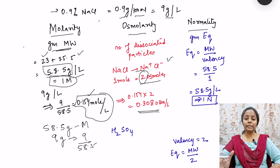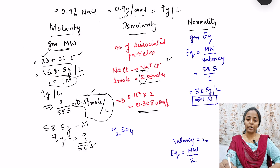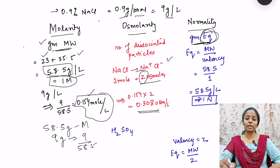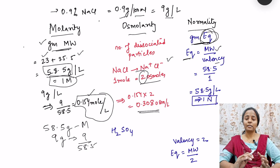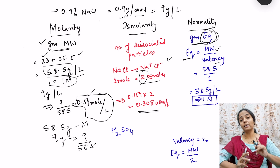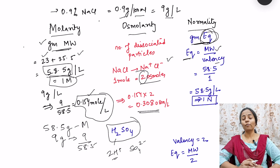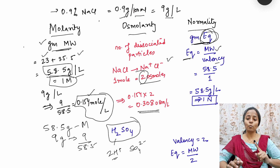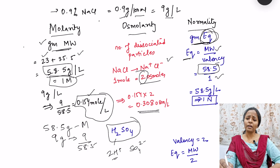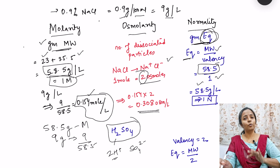For normality, we use equivalent weight rather than molecular weight. Equivalent weight is calculated as molecular weight divided by valency. For NaCl, there is one positive and one negative ion, so valency is one. Therefore, the equivalent weight equals the molecular weight — 58.5 grams. So for NaCl, one mole equals one normality.